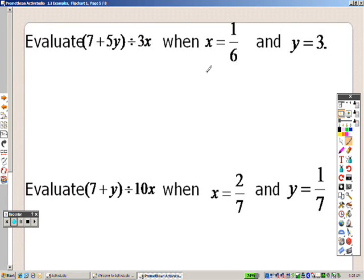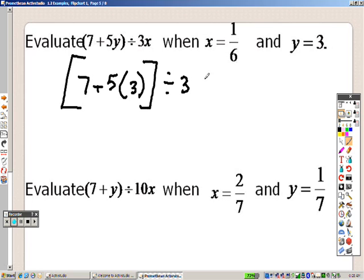And this does work even with fractions as well. 7 plus 5, and that is a 3 for y. All of that is in parentheses, divided by 3 and a sixth.